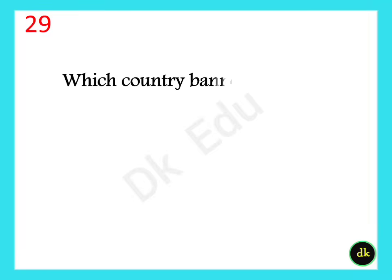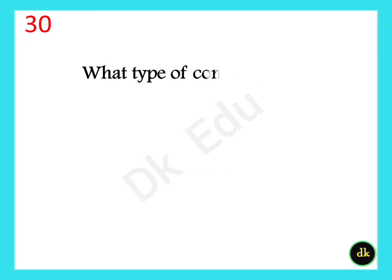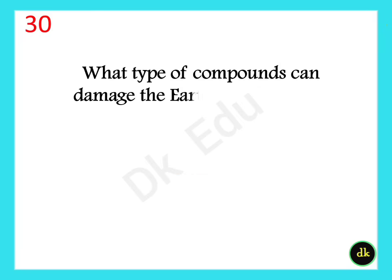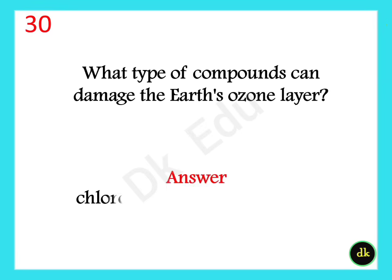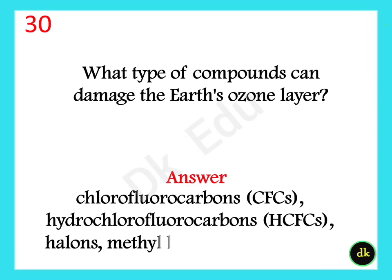Which country banned CFCs first? Sweden, on January 23rd, 1978. What types of compounds can damage the Earth's ozone layer? Chlorofluorocarbons, Hydrochlorofluorocarbons, Halons, Methyl Bromide, and Carbon Tetrachloride.